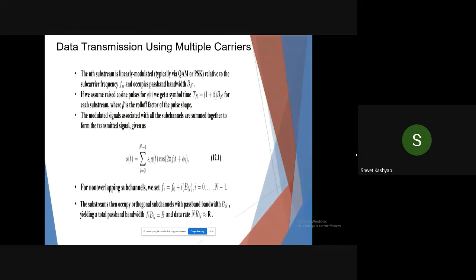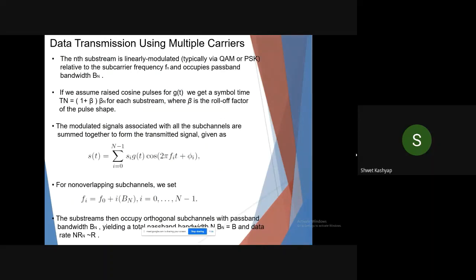The N subsystems are linearly modulated relative to the subcarrier frequency f_n and occupy passband bandwidth B_n. The modulated signals associated with all sub-channels are summed together to form the transmitted signal given as s(t) equals summation i equals 0 to N minus 1 of s_i(t) times cosine of 2 pi f_i t plus phi_i.